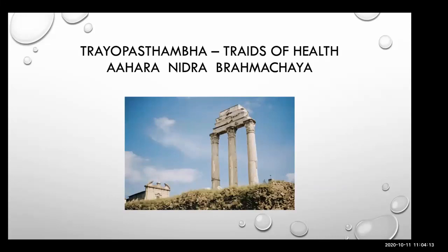Ayurveda explains tryo upasthamba — the three pillars of health. The three pillars explained in Ayurveda are ahara, nidra, and brahmacharya. They are the three pillars of health. Ahara is food; nidra and brahmacharya come into the context of vihara. Among the vihara, nidra and brahmacharya have been given special preference when Ayurveda explains about the three pillars.